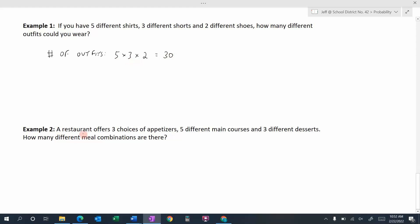Second example. A restaurant's offering three choices of appetizers, five different main courses, and then three different desserts. So how many different meal combinations would there be? Well, we have three choices for the first one, we have five choices for the second choice, and we have three different choices for desserts. So this would be three times five, which is 15, and 15 times three. There would be 45 different meal combinations.